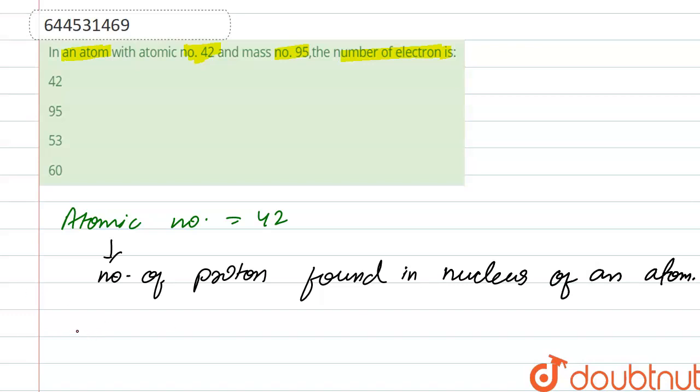And in an atom, number of protons is equal to number of electrons.